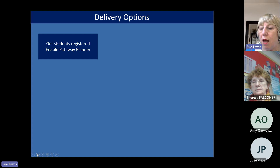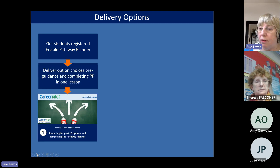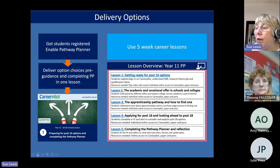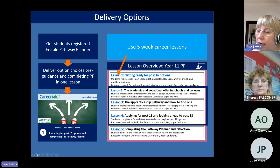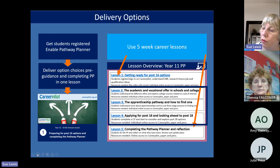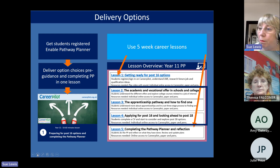In terms of delivering the pathway planner, you first need students registered — that has to happen at a different time from the pathway planner lesson because they need to be in the system so you can allocate the pathway planner to them. Then you deliver the one-hour lesson and at the end they complete the pathway planner. We also have five-week career lessons: for Year 11, lesson one covers options generally, lessons two through four drill down into different pathways, and lesson five is where they complete the pathway planner. If you can afford time for five lessons, by the time they do the pathway planner they'll have understood a lot more about pathways and you may have fewer red students.